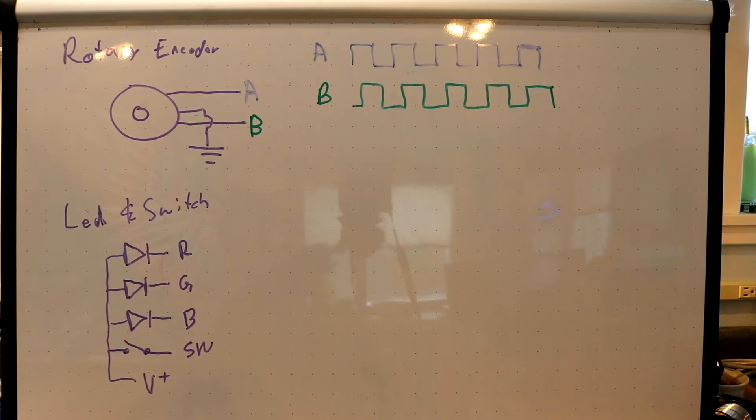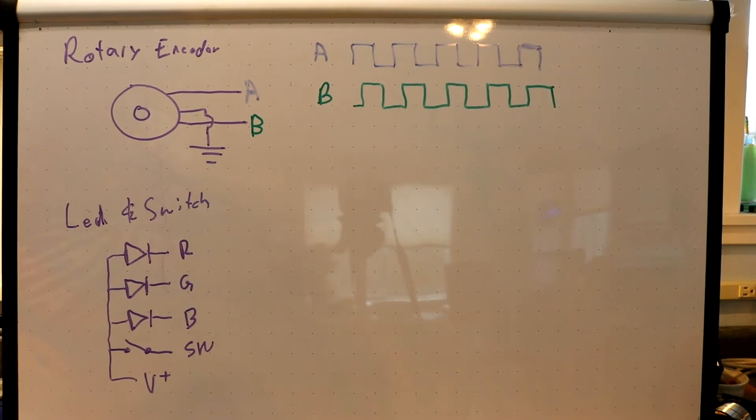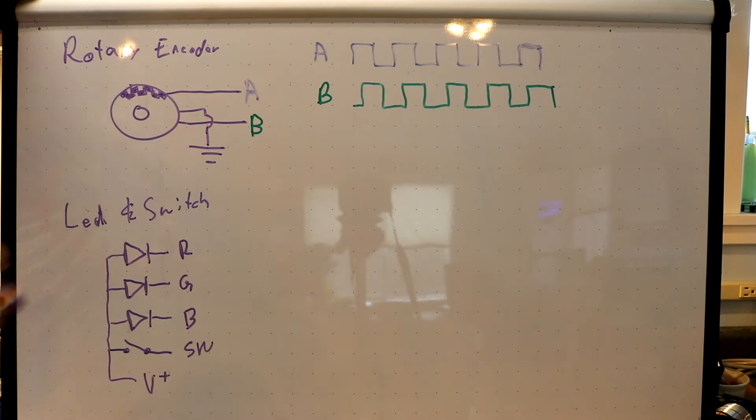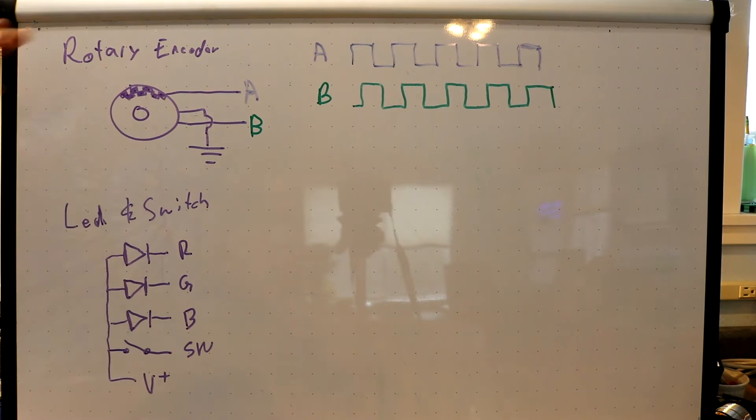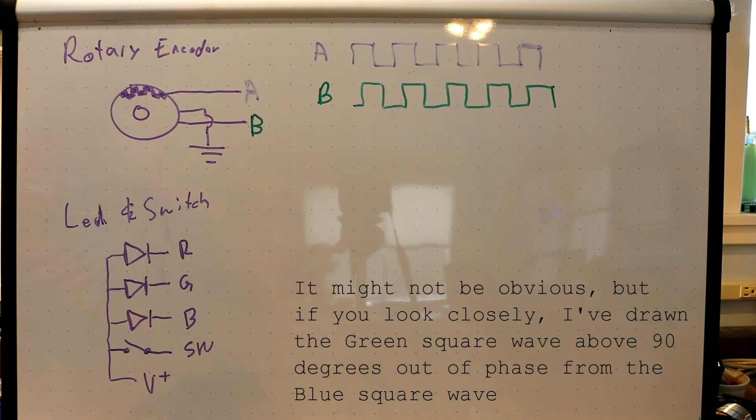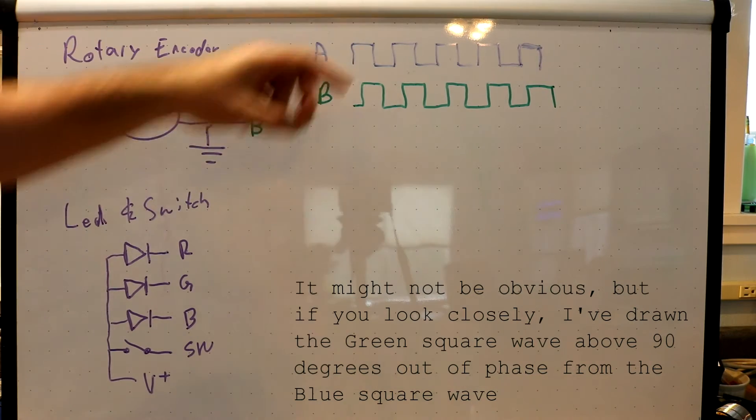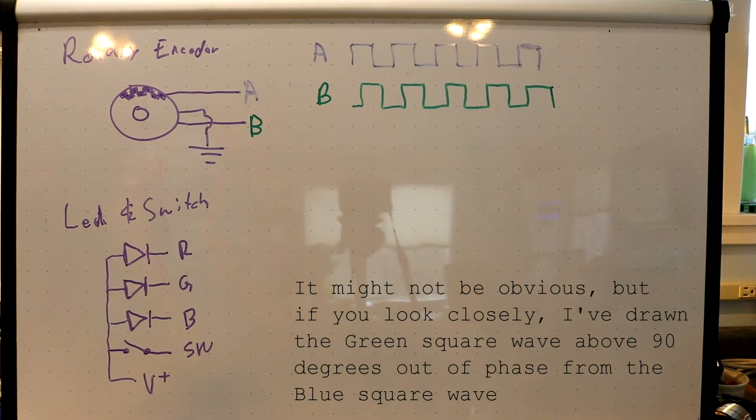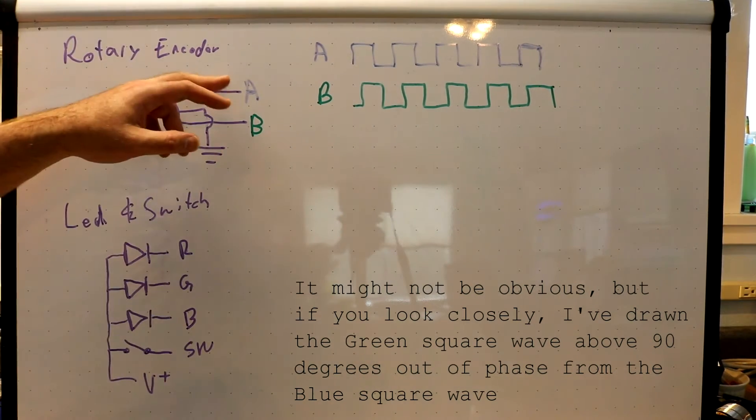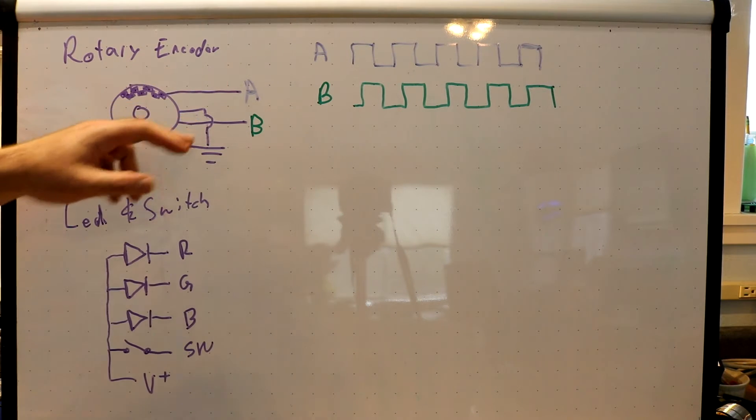So what is a rotary encoder? There's two parts to it. First, let's look at the encoder part. Typically they'll have these little marks on them—they'll be optical ones or mechanical ones, this is a mechanical one. These little marks, a contact will read these as you turn it, and it produces an output stream on the two output pins. These pins will be switched between ground.